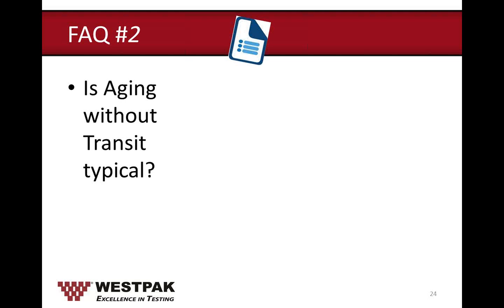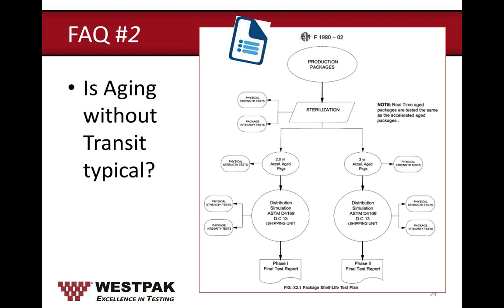The next question: what is the norm — aging without transit, or aging with transit? Our customers are split on this. I mentioned that aging and package performance testing are separate entities according to ISO 11607, but some customers still combine them. This traces back to the 2002 revision of ASTM F1980, which included a flowchart indicating distribution simulation per ASTM D4169 should be conducted after accelerated aging. In the 2007 revision, that flowchart was removed, and some customers started separating aging and transit.